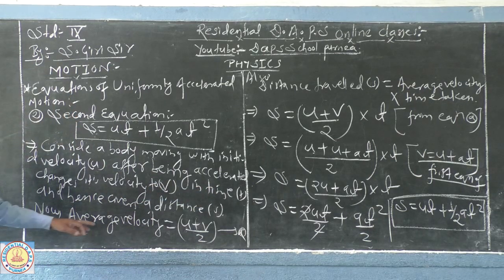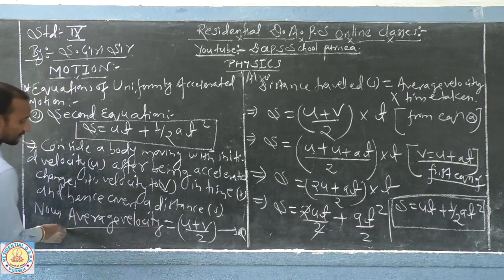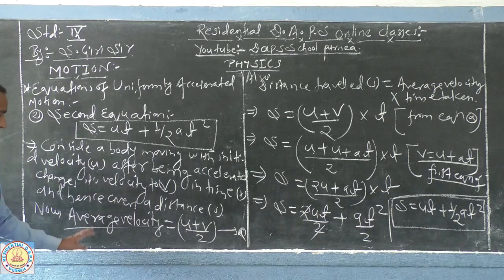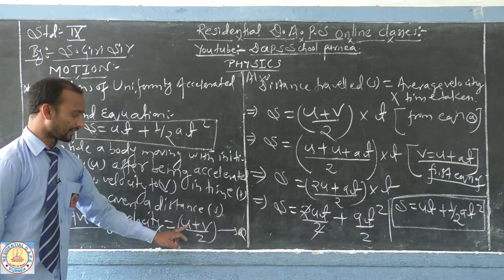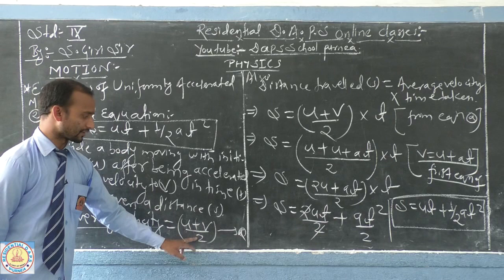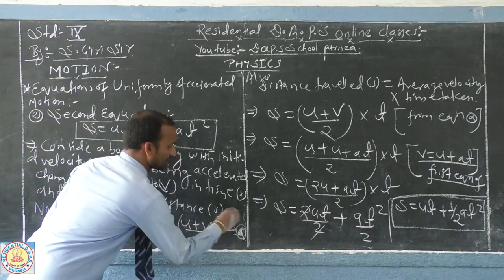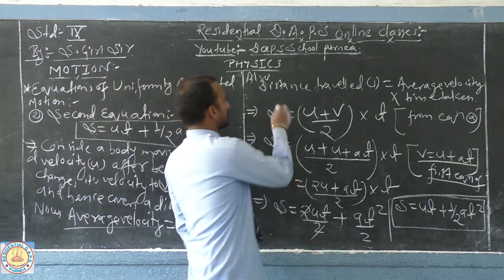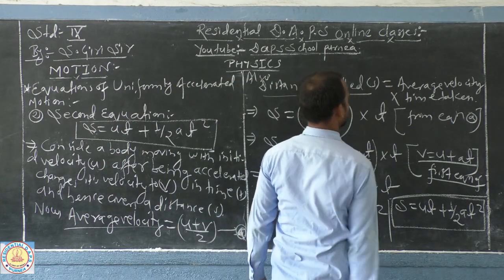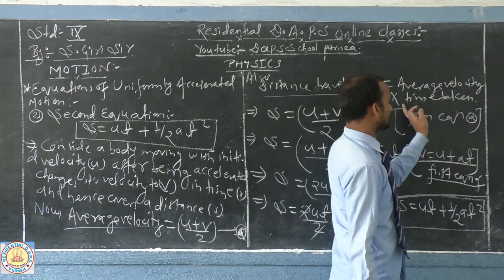Now, from here we can write by using the formula of average velocity, average velocity equal to mean of both velocities u plus v by 2. And again we can write distance traveled s equal to average velocity into time.